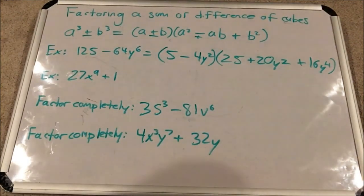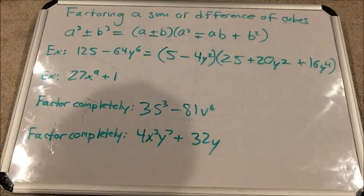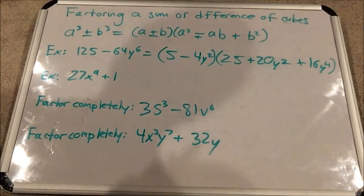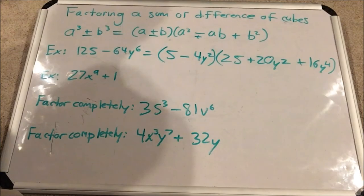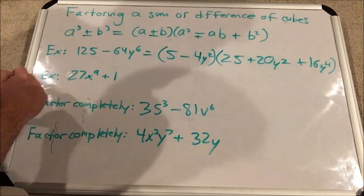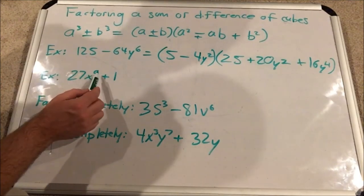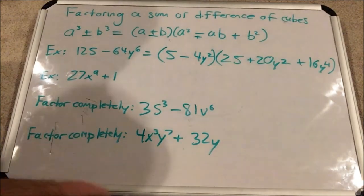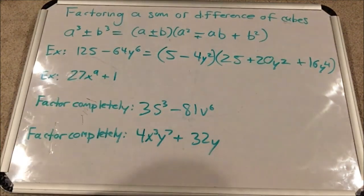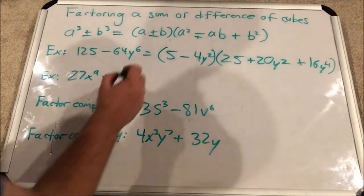Next example. 27x to the 9th plus 1. 1? Really? Yes, really. Check. Make sure each one is a sum of two cubes. Is this a cube of something? 27 cube root? That's 3. So yes. And x to 9. The cube root of that is x to the 3rd dividing by 3. And 1. Is that a cube root of anything? Yes. You can take the cube root of 1 and you get 1. So we do have two cubes.